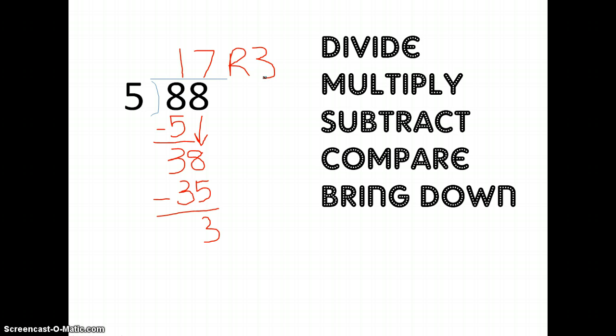All right, we're going to do one last problem. 74 divided by 2. First thing I do is divide. I'm going to divide my tens. 2 will go into 7 three times. Now I multiply. 3 times 2 is 6. Subtract. 7 minus 6 is 1.